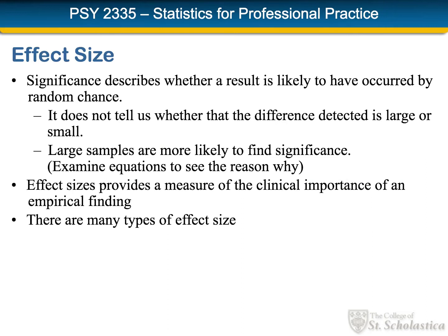One of the truths about significance testing is that when we have a large sample, it makes it easier and easier to find a significant result. If you think about the standard error for your one-sample t-test, you have the variability of the sample on the top of the equation, but on the bottom you've got the square root of n. So if the sample size n goes up to 100, 200, or 400, as it gets larger, that standard error gets smaller, and when the standard error gets smaller, your t-result gets really quite large, even though the actual gap between the two means may not have changed at all.